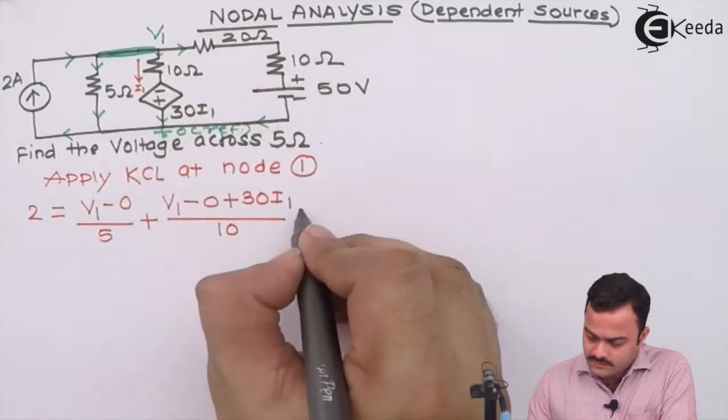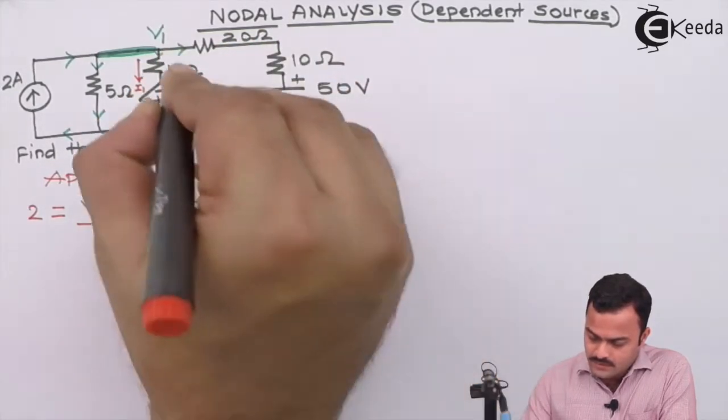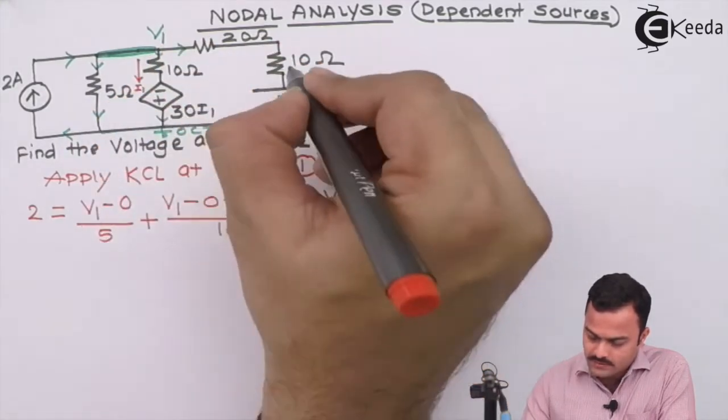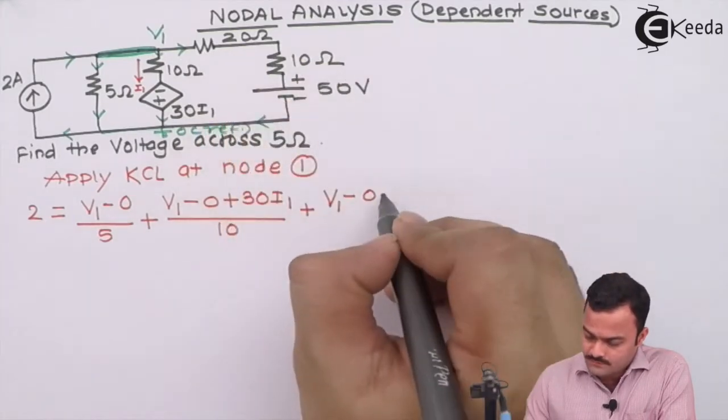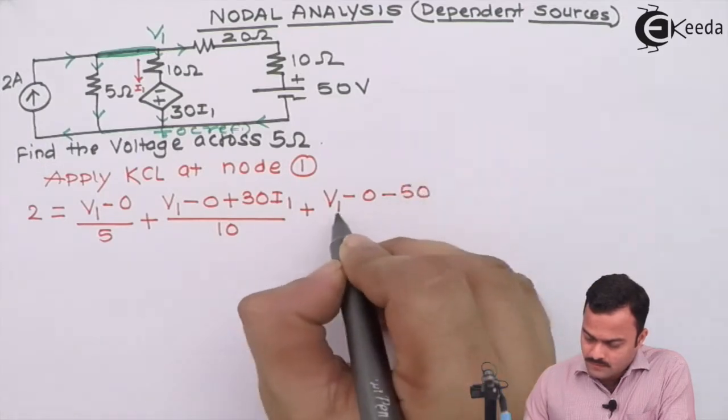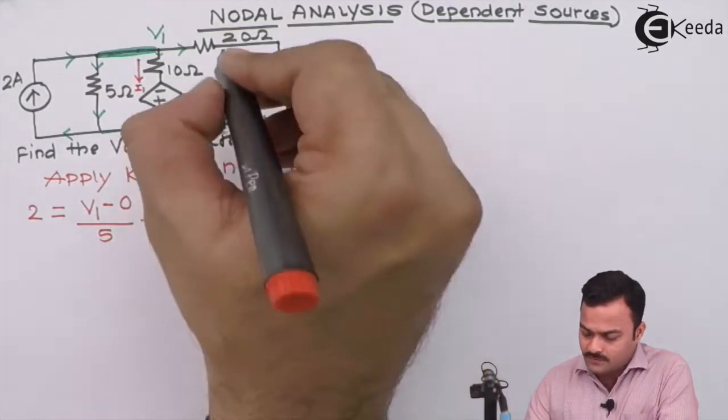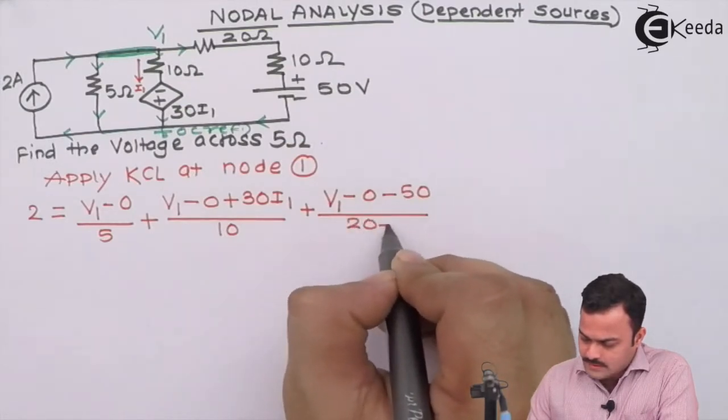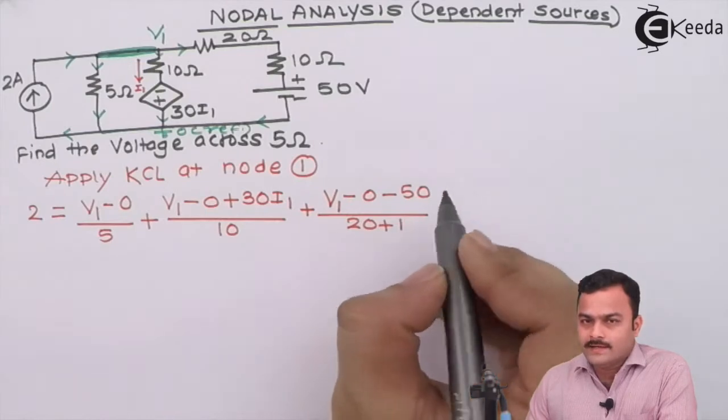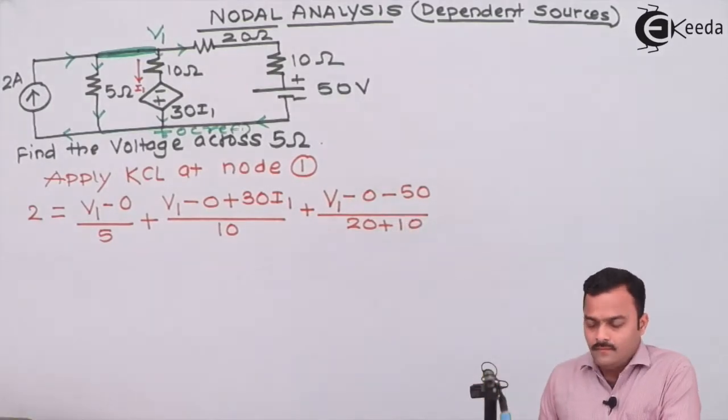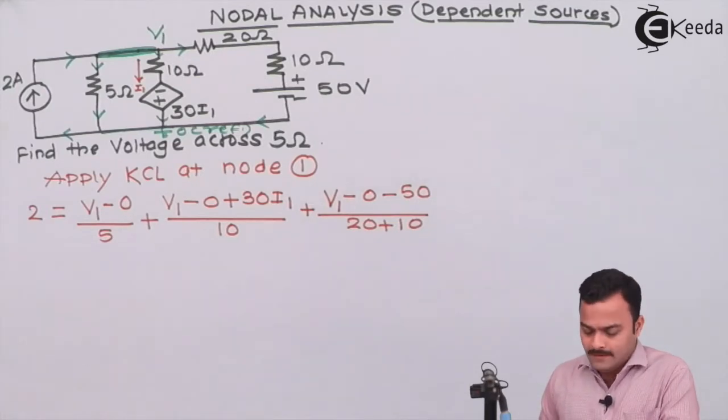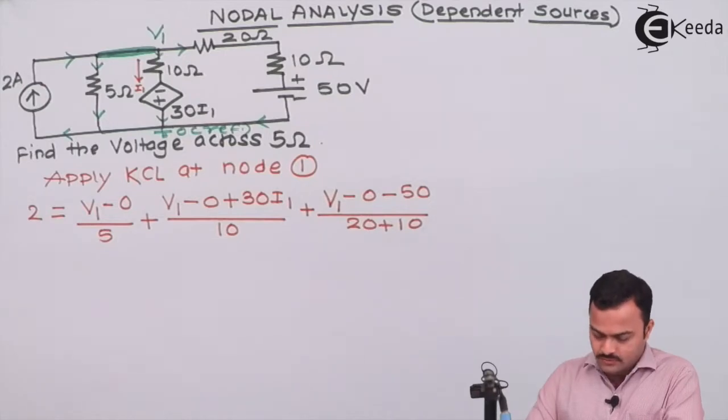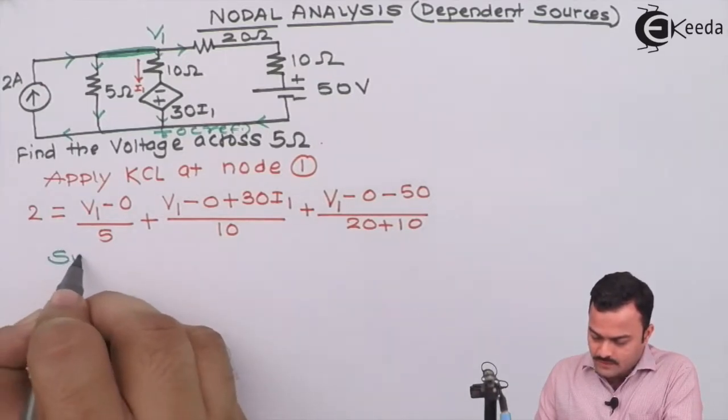So plus 30 I1 divided by resistance of this branch which is 10, and this is also outgoing which is starting with V1 ending on reference that is 0. In the current direction, voltage is changing its polarity from plus to minus, so it's a voltage drop, so minus 50 divided by total resistance of this branch which is 20 plus 10. Here V1 is the node voltage or variable which we declared initially, and I1 is their variable. We need a substitution for I1, so substitution equation we have to write for I1.